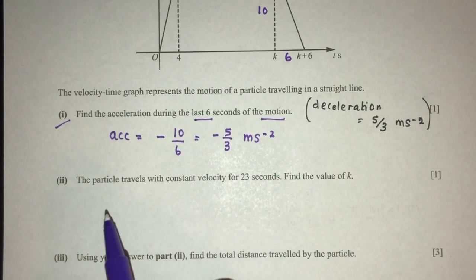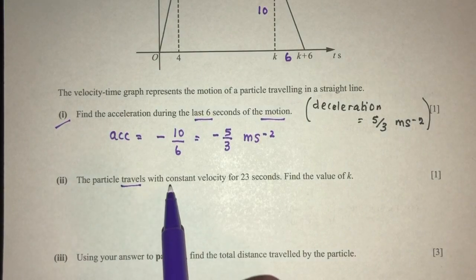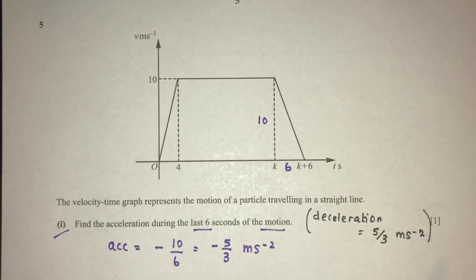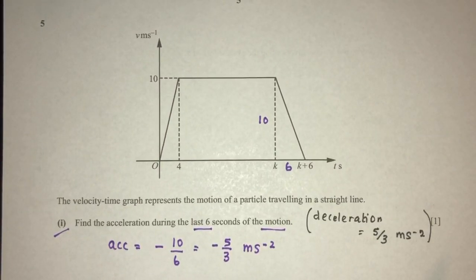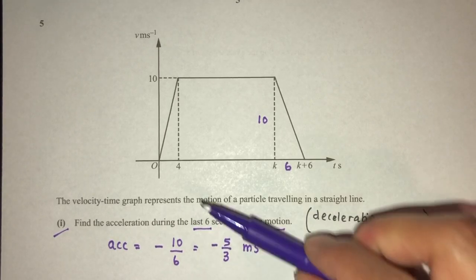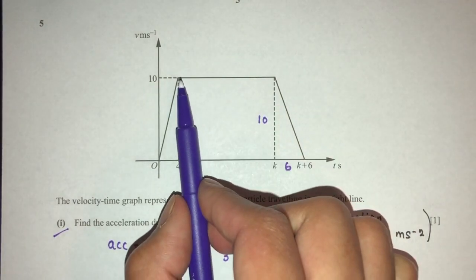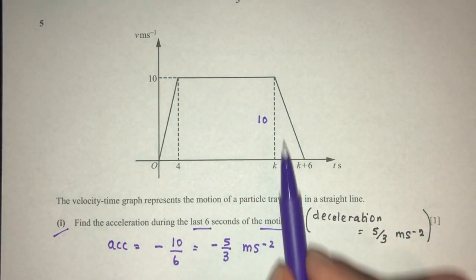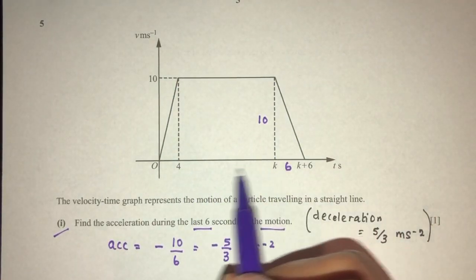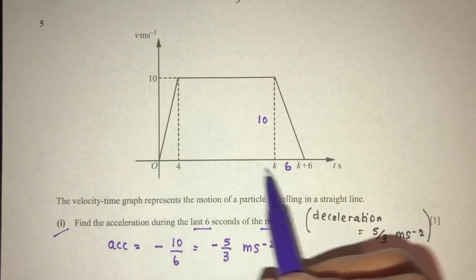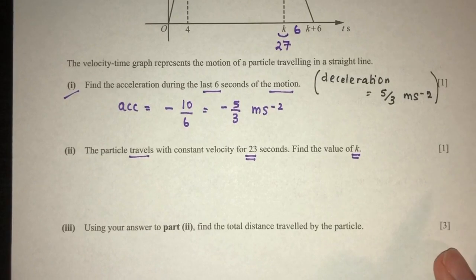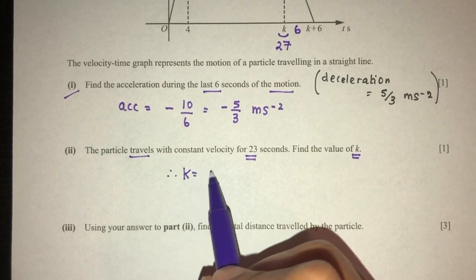For part 2: the particle travels with a constant velocity for 23 seconds — find the value of k. Looking at the graph, the velocity was constant between t = 4 and t = k. So 4 + 23 = 27. The value of k is 27.